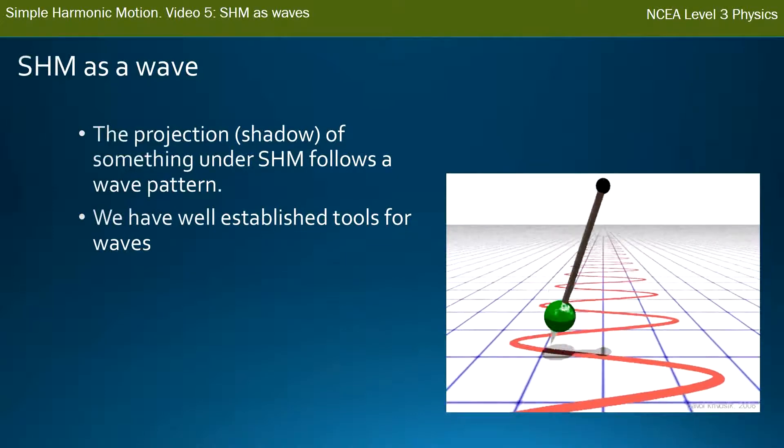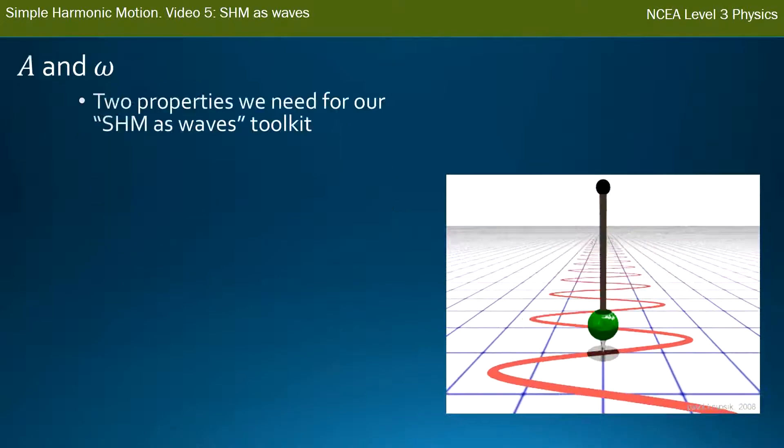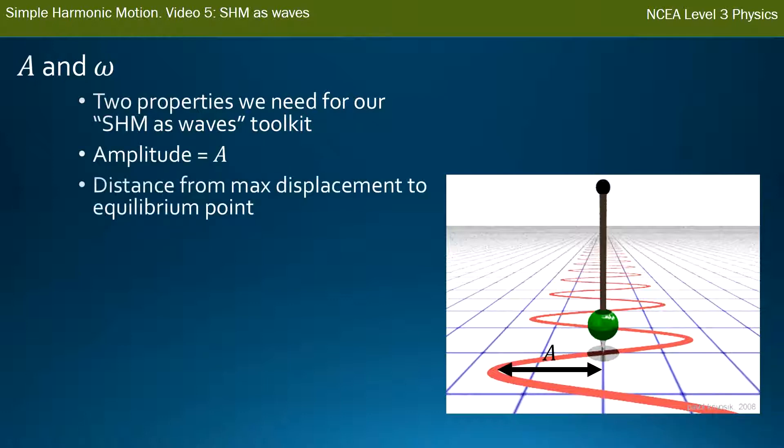Just going to introduce two important properties that we need to know to be able to do this—dealing with it as a wave. The first one is called amplitude. You can see on the diagram on the right, it's the distance from the maximum displacement—one edge of the wave or how far the pendulum swings—to the equilibrium point. It's not the full back-and-forth distance; it's just from the middle equilibrium point to one of that maximum displacement.